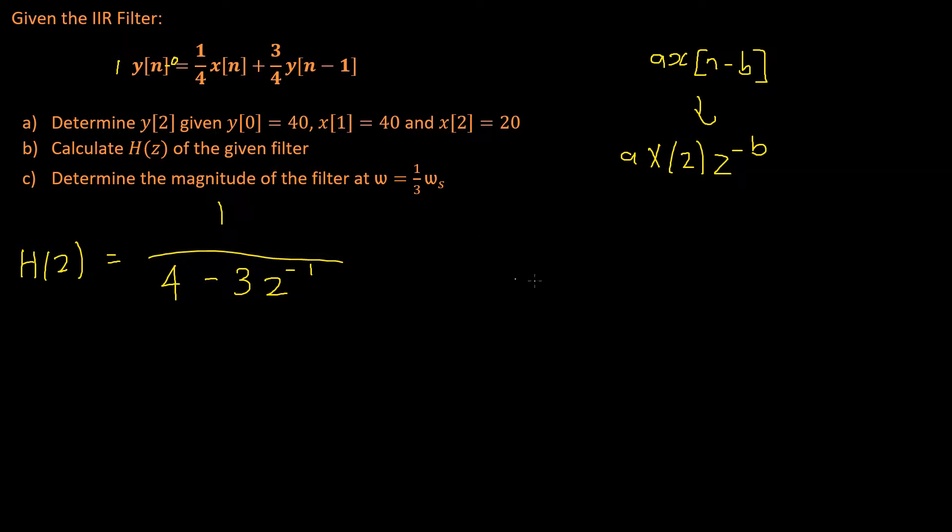Okay, so now we're going to determine the magnitude of the filter at omega equals 1 third omega s. How can we do that? Well, we can do that by making the substitution and calculating h of e to the j omega t. So how do we make this substitution into our previous example? Well, before we do that, we're just going to do a little bit of calculations.